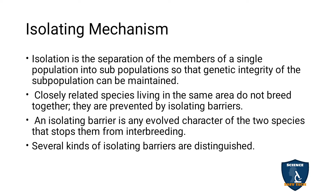Closely related species living in the same area do not breed together. They are prevented by isolating barriers. An isolating barrier is any evolved character of two species that stops them from interbreeding. From the isolating barrier, new species can evolve, because it stops the two species from interbreeding.